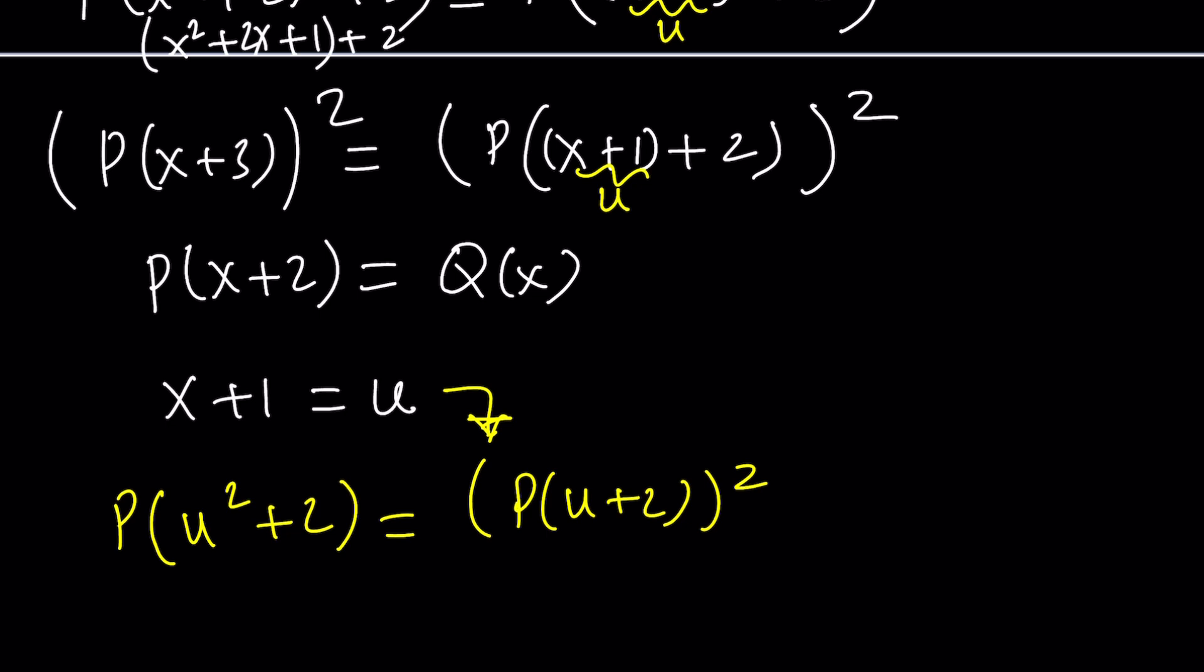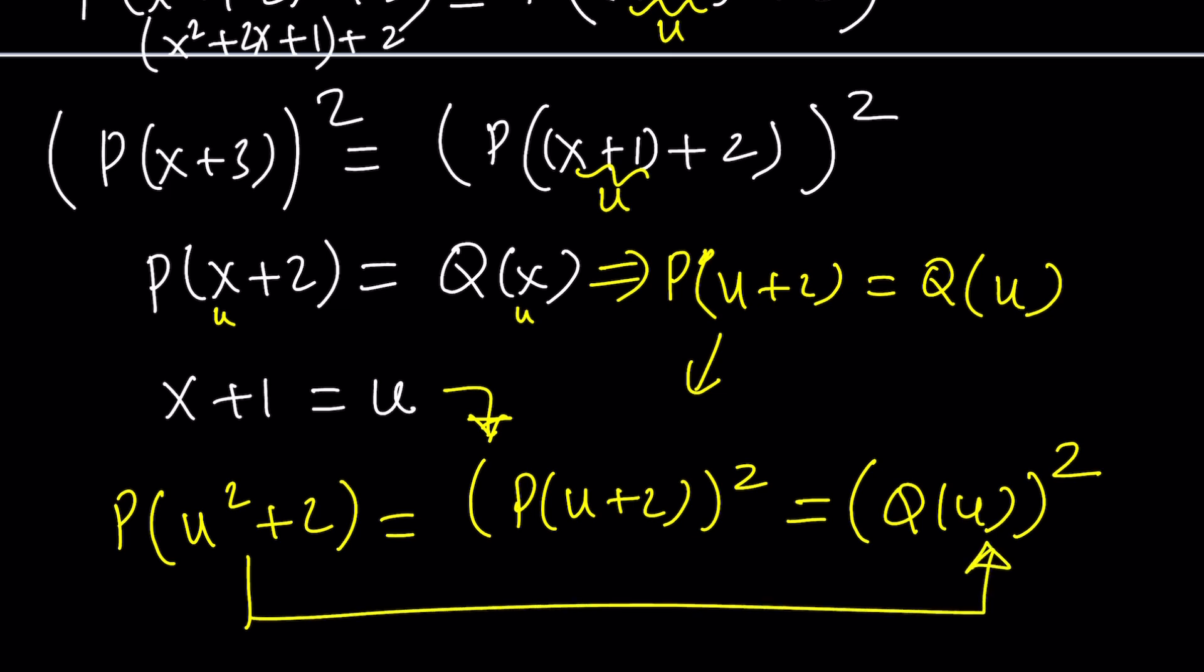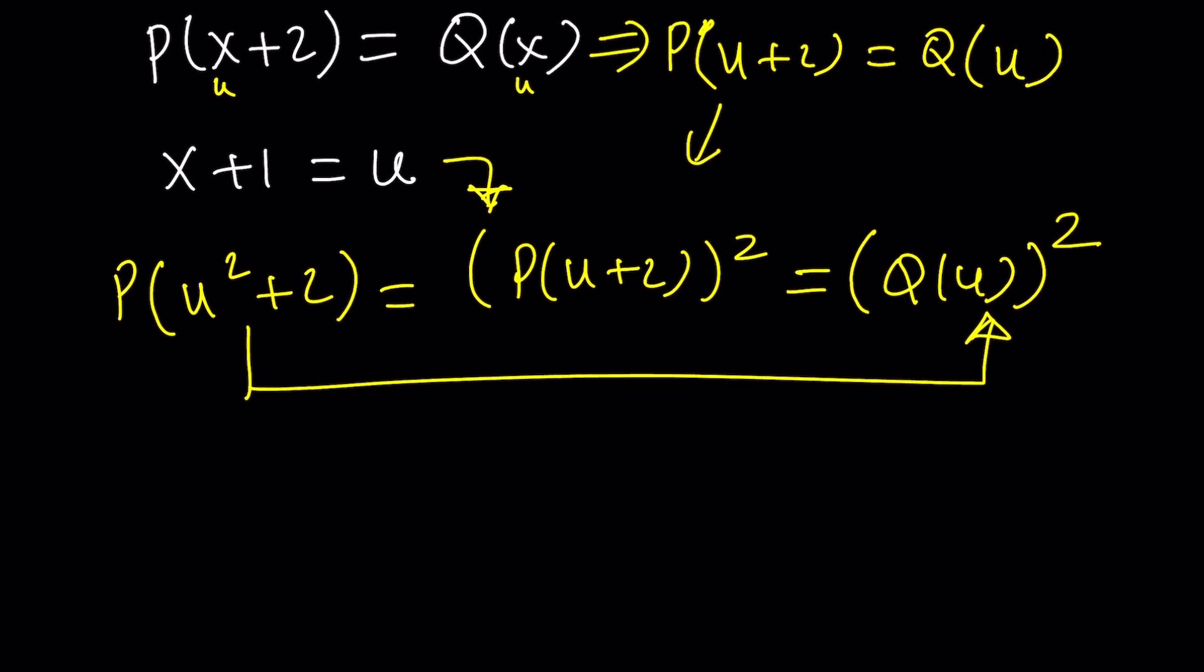Not only that though, because we set P(x + 2) equal to Q(x). So what happens to P(u + 2)? If you just replace x with u, you get P(u + 2) becomes Q(u), which is good because that's what we were looking for. Notice that this now can be replaced with Q(u) and I have to square it on the outside. So here is the association I'm trying to get. But what is P(u² + 2)? Well, Q is P(x + 2).